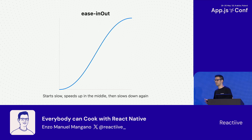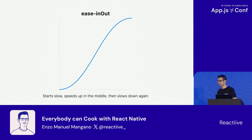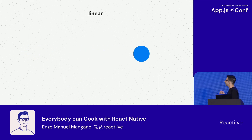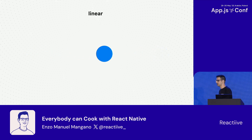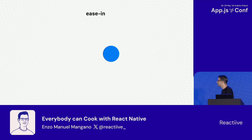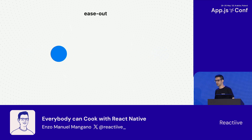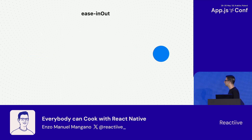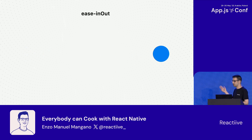We can try to use our personal taste, hopefully for the last time, and play with all the different easings to see which one looks better. The linear one feels a bit robotic and mechanical — it doesn't really look natural. The ease in feels like jumping straight into a wall — it doesn't feel natural either. The ease out looks definitely better than the previous ones, but there is still something missing. And the ease in-out just looks perfect because it starts slow, accelerates, and finally decelerates — that's exactly how I expect an object to be moving.